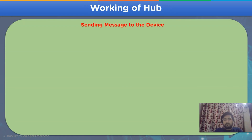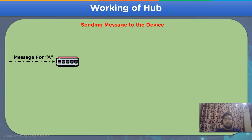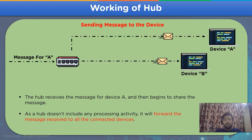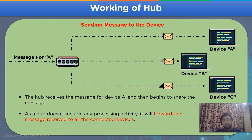Now let's move on to the working of a network hub. For the first scenario, we will assume that a message is being sent through the hub to a destination node. According to the example, the hub has received a message for device A. Due to the absence of any intelligent unit or processing point, the hub will share that message to all other connected devices — device B as well as device C — creating a lot of excess traffic in the network channel.